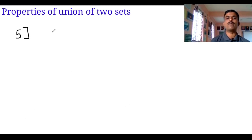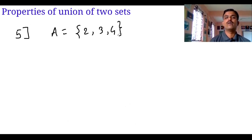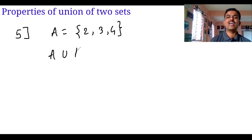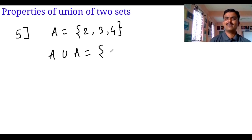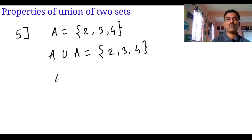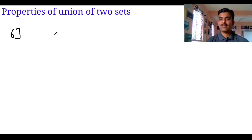Now the next property. Suppose A is equal to {2, 3, 4}. Taking A union A, the answer is {2, 3, 4}. This means the union of a set with itself gives that same set.